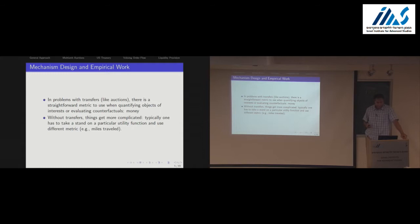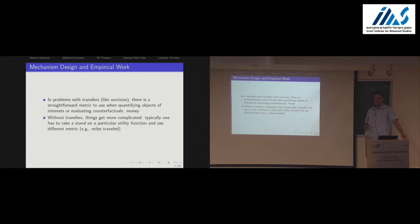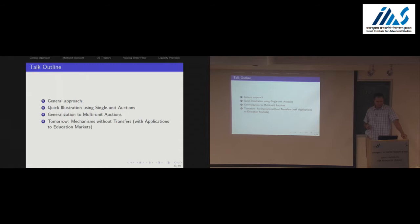Today I'll focus mostly on auctions — that's an easier case because it's fairly easy to go back and forth between counterfactuals since we have an obvious metric: money, with transfers. Tomorrow I'll talk more about education markets where there are no transfers, and the utility function won't have a price in it. Translating utils into something comparable across counterfactuals is much more complicated — typically we normalize something like a distance coefficient and compare mechanisms in terms of miles traveled.